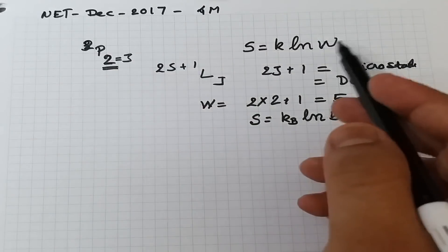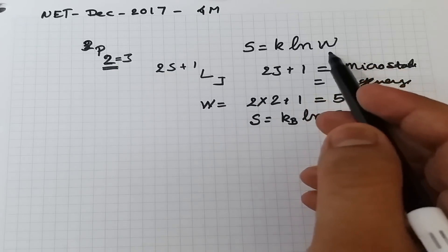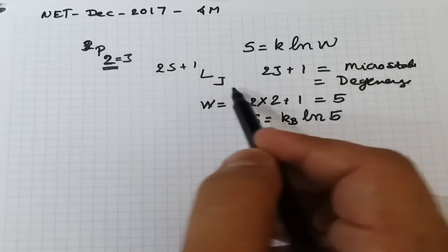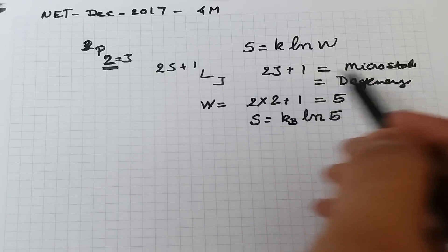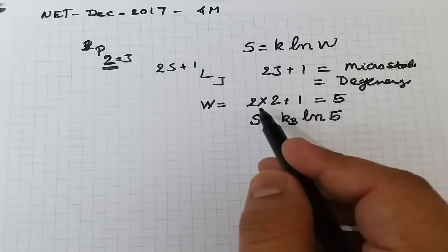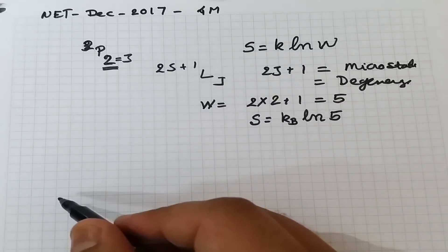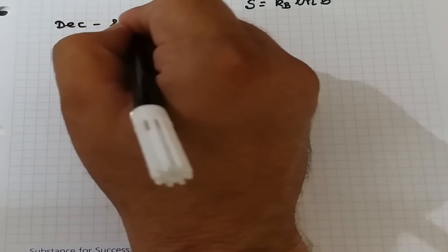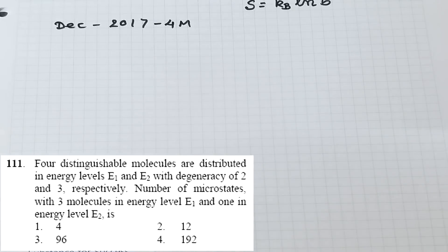For any given term symbol, directly calculate the microstates as 2J + 1 and substitute into S = k_B ln W to get residual entropy. Moving on to the next problem, also from December 2017 and again for four marks: four distinguishable molecules are to be distributed in energy levels e₁ and e₂ with degeneracies 2 and 3 respectively.